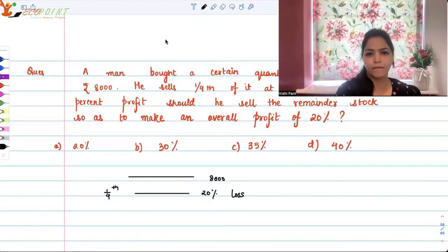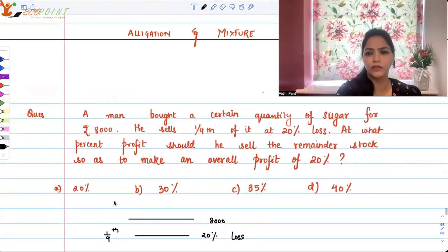Now, which means that one-fourth is Rs 2,000 or in terms of quantity, we'll see to it. Let's just write down the conditions given to us.